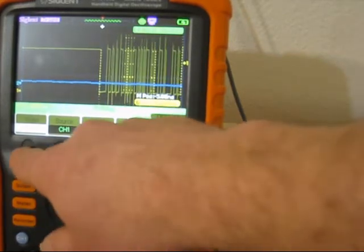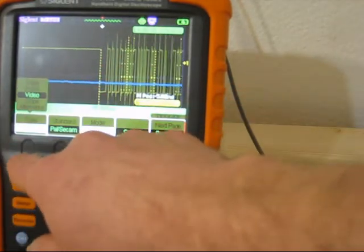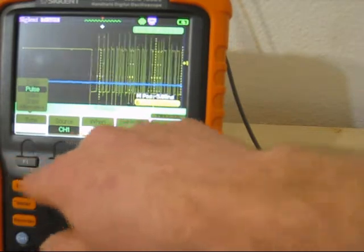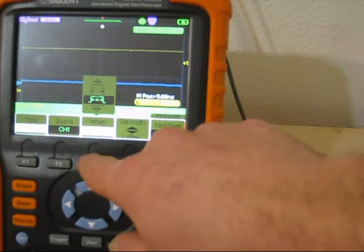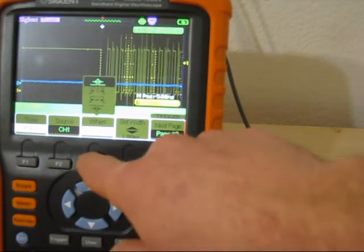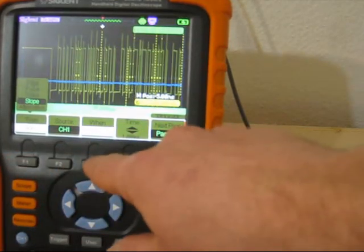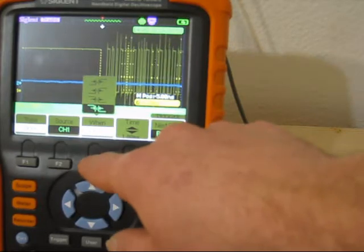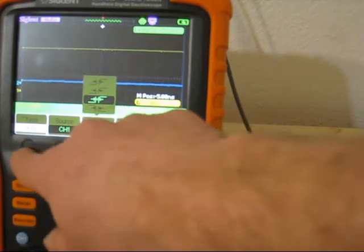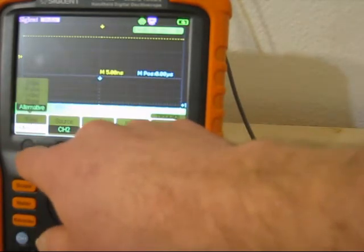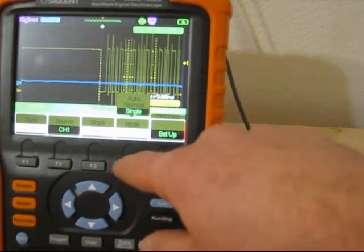So for the trigger, you have the option type: edge, pulse, video. Go to pulse, then you have large, equal, all different kind of video slope or just alternative.